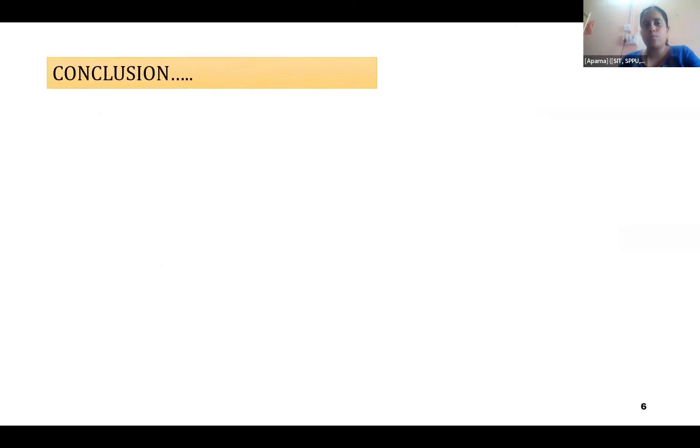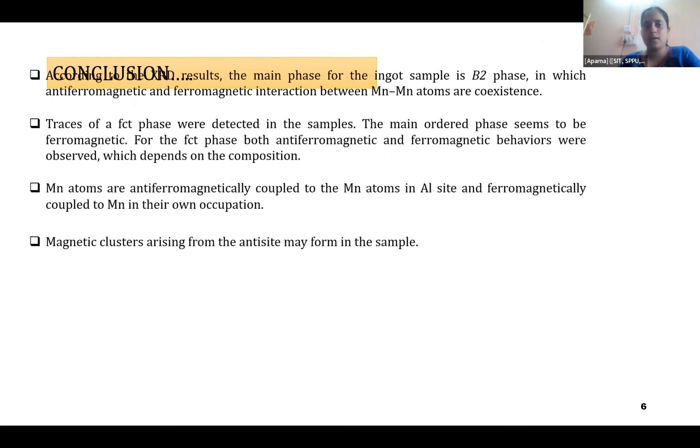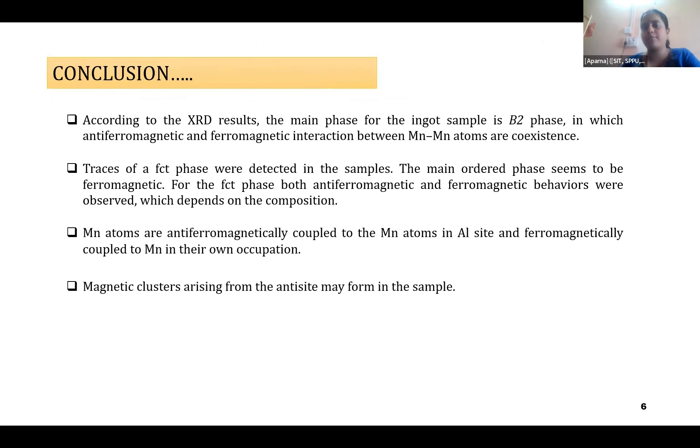So I would like to conclude by saying that according to the study results the main phase for our ingot sample seems to be the B2 phase in which there is an anti-ferromagnetic and ferromagnetic interaction which is due to the presence of the Mn-Mn atoms. As I have said even though the ratio is two to one between Fe and Mn, this manganese has a similar nearby molecular weight of iron.